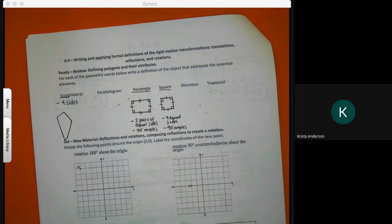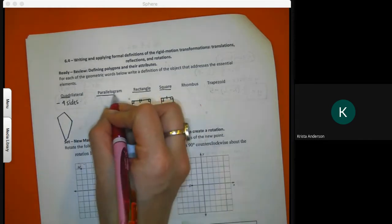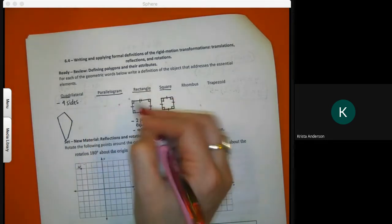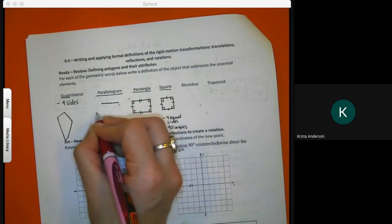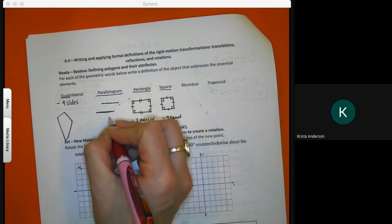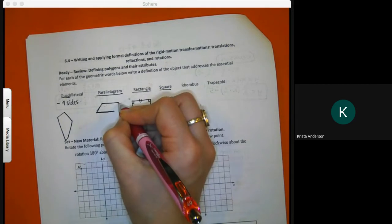Now I'm going to do parallelogram. The reason I wanted to do rectangle first is because a parallelogram looks like a rectangle. The only thing that's different is it has been shifted. The bottom, just shift it to the left or right a little bit, and then connect the points.